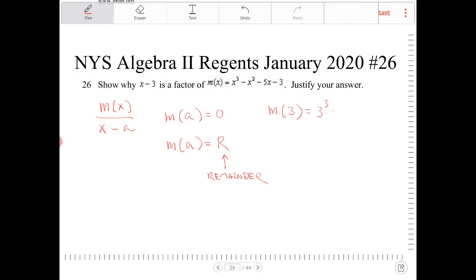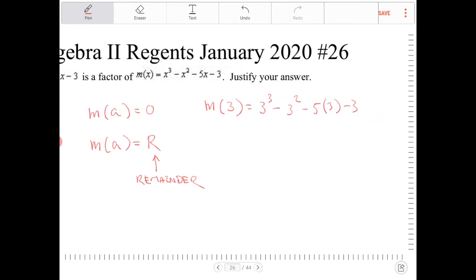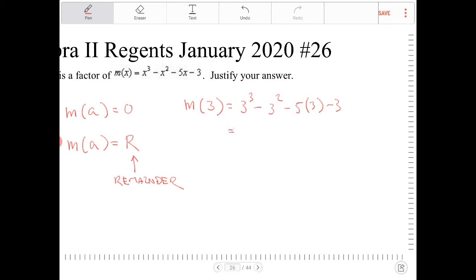I'll end up with 3 to the 3rd, minus 3 squared, minus 5 times 3, minus 3. It's a lot of 3s everywhere. So 3 to the 3rd is 27, 3 squared is 9, and then 5 times 3 is 15, and then minus 3.